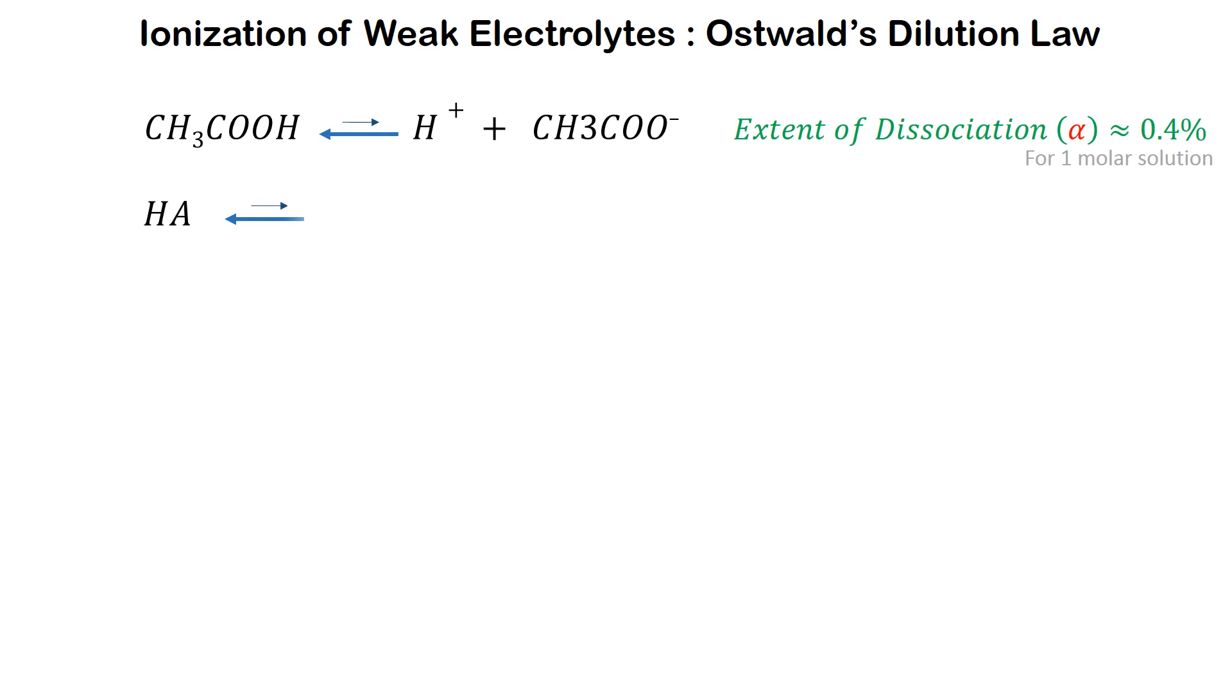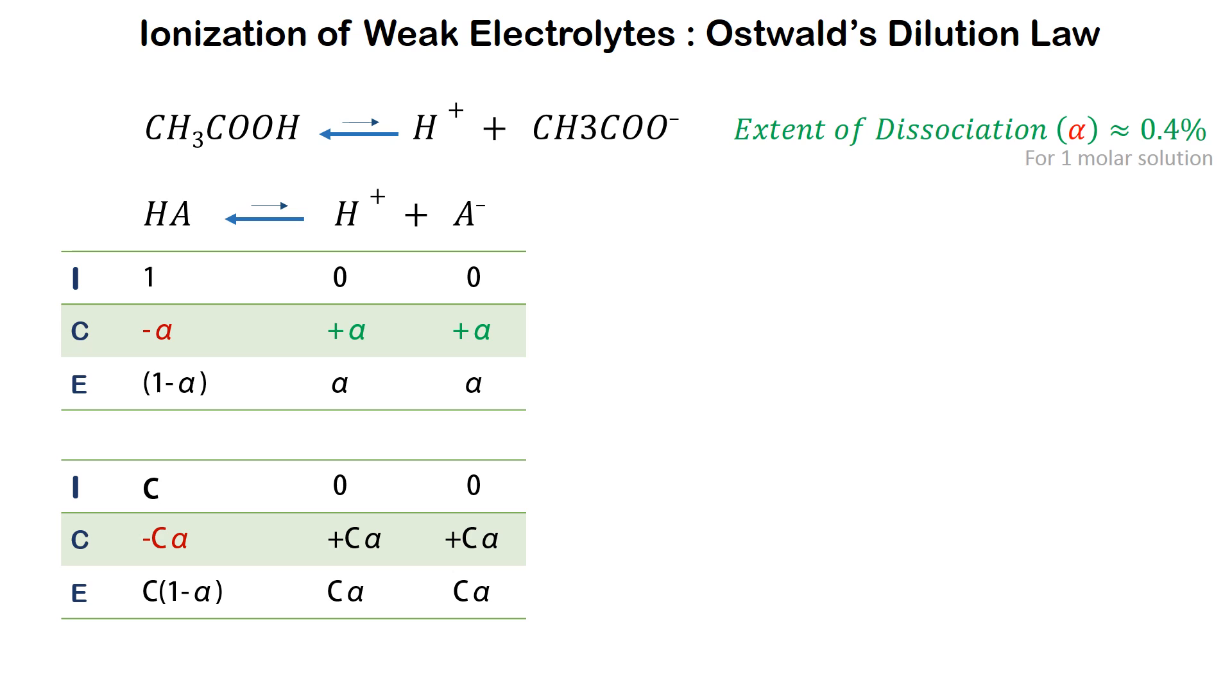We now generalize this dissociation of a weak acid in water. If we start with one mole of a weak acid like HA and alpha is the number of moles which get dissociated, we have alpha moles of H plus ions in water and alpha moles of A minus ions in water. What remains is 1 minus alpha moles of HA. Similarly, if starting with a molar concentration of C, we will have C alpha moles of H plus ions and C alpha moles of A minus ions in water, and what remains of HA is C times 1 minus alpha moles.